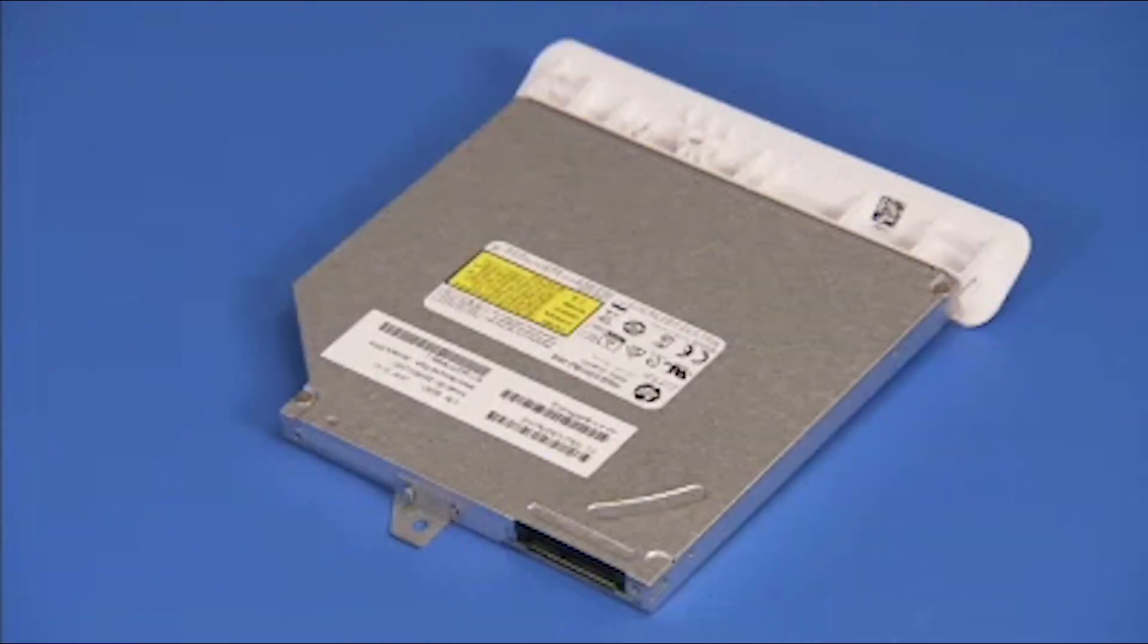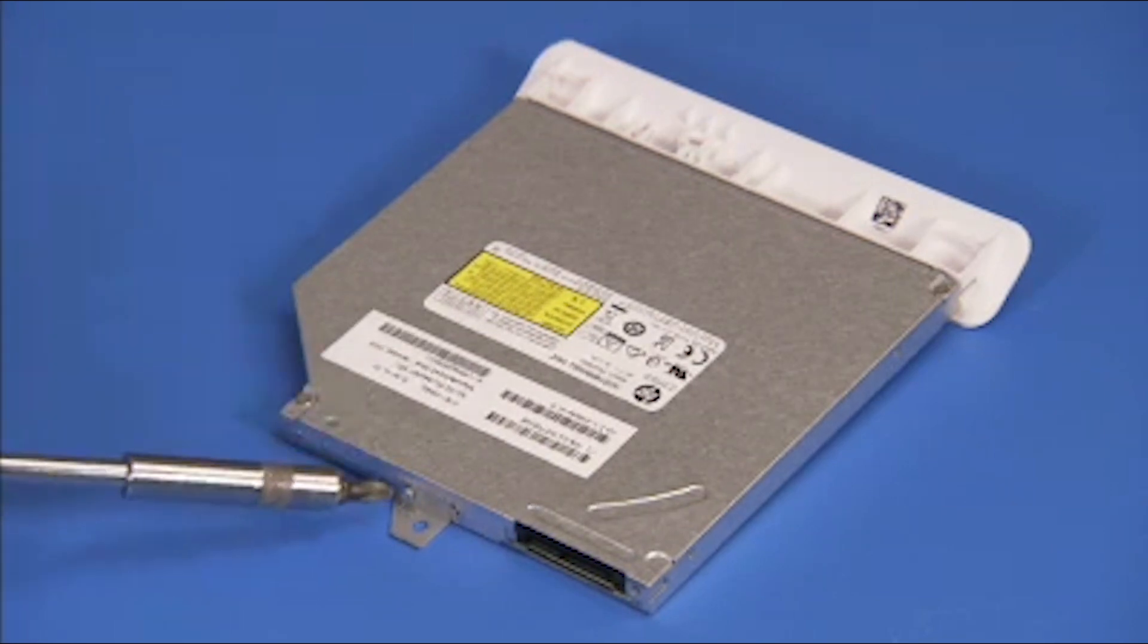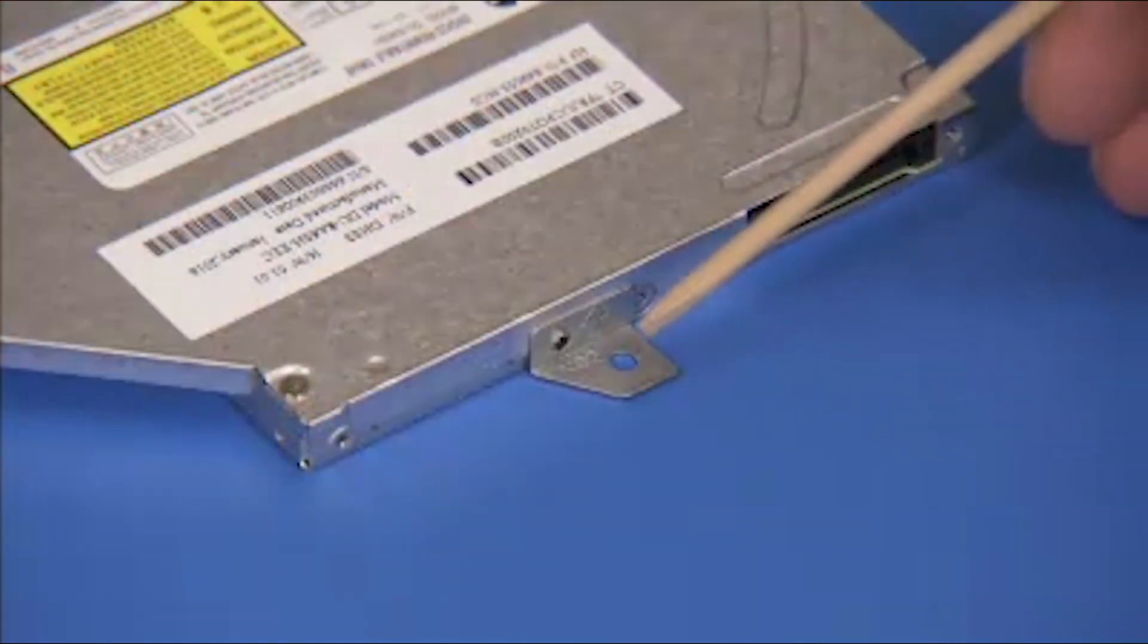If replacing the optical drive, remove the small bracket and side bezel from the drive. To remove the bracket, detach the single Phillips No. 1 screw at the rear of the bracket and pull the bracket away from the drive.